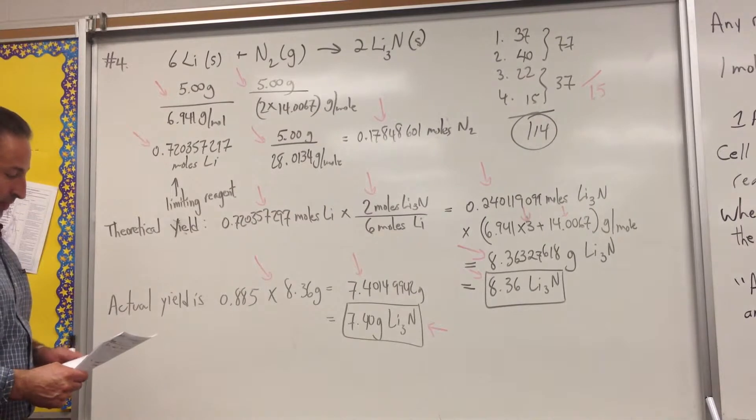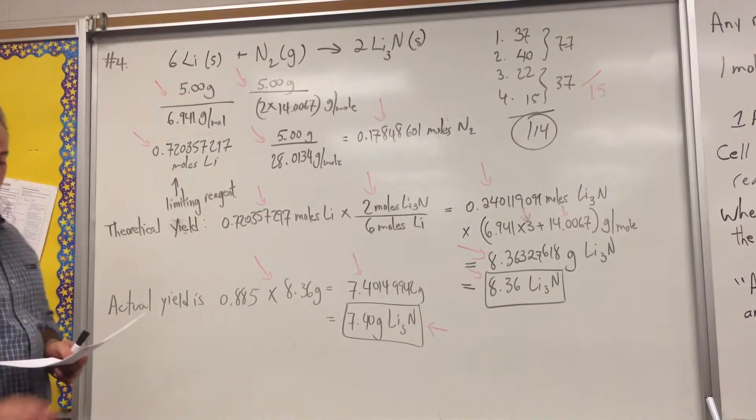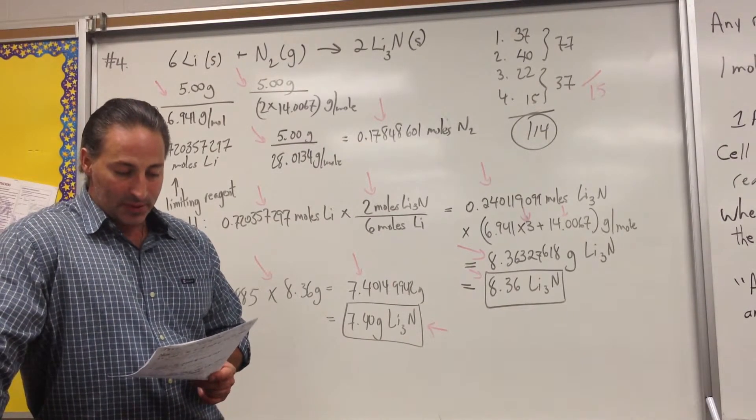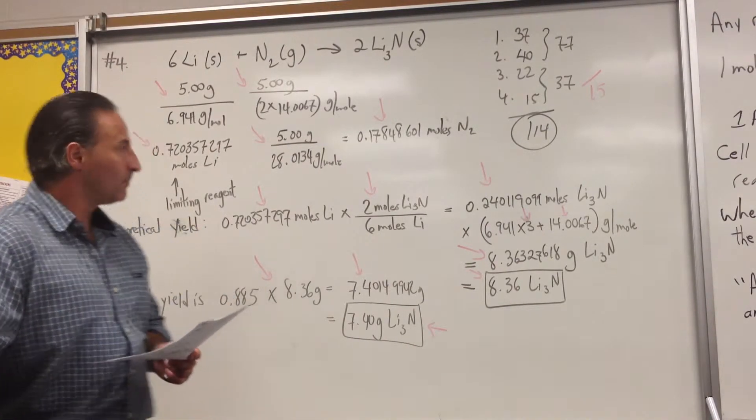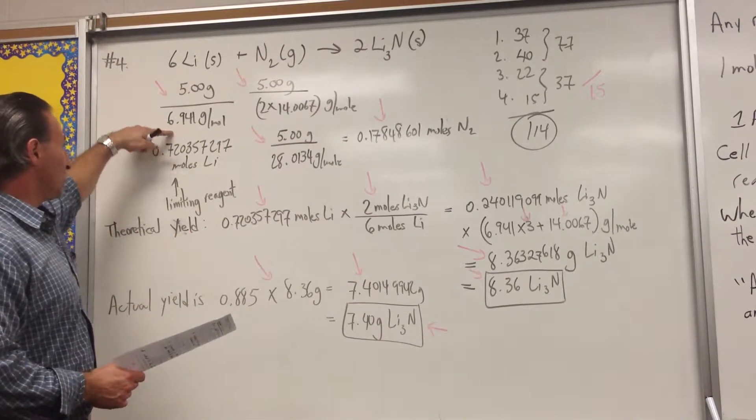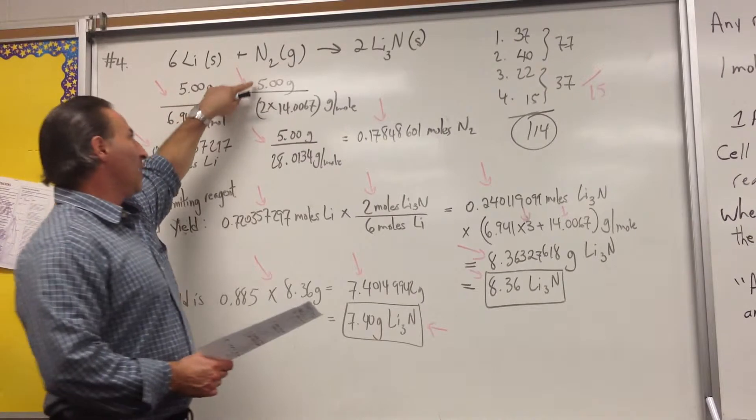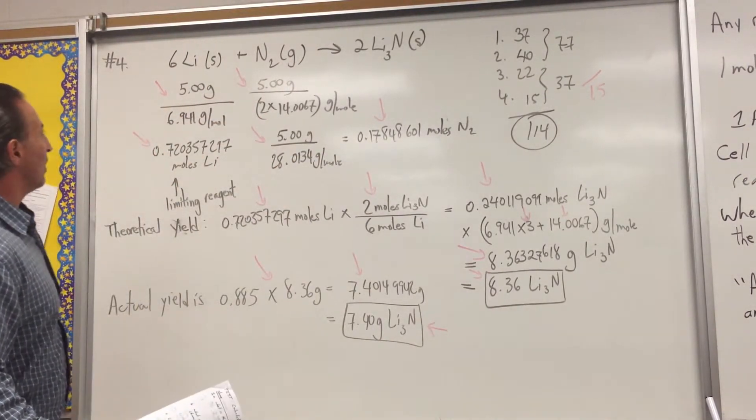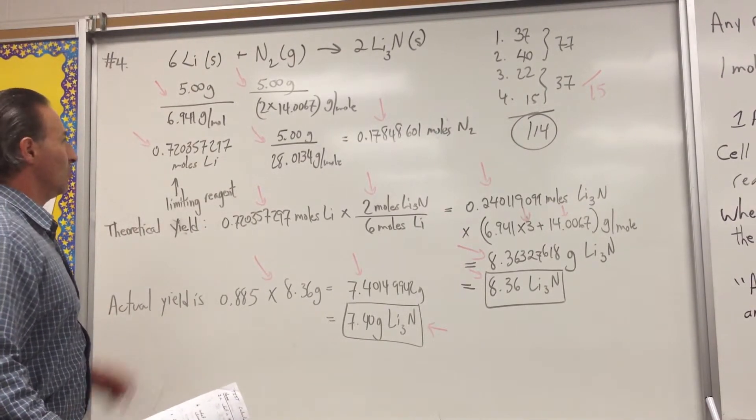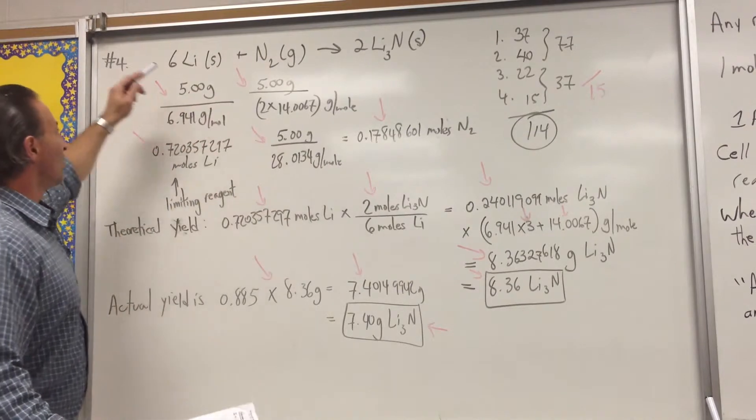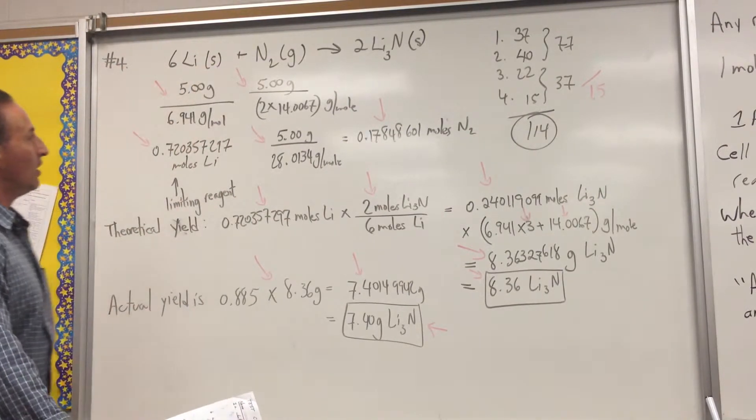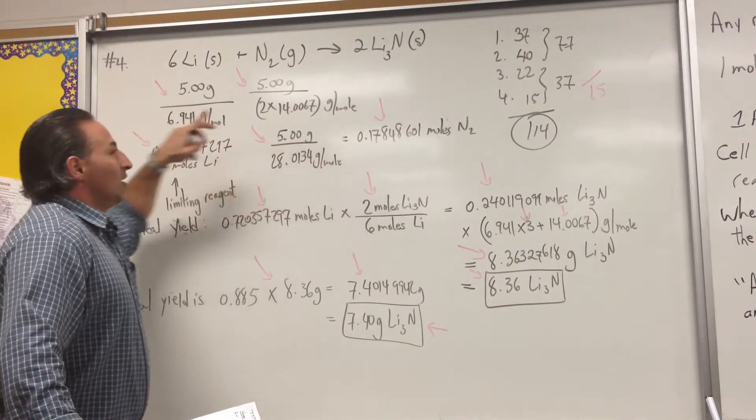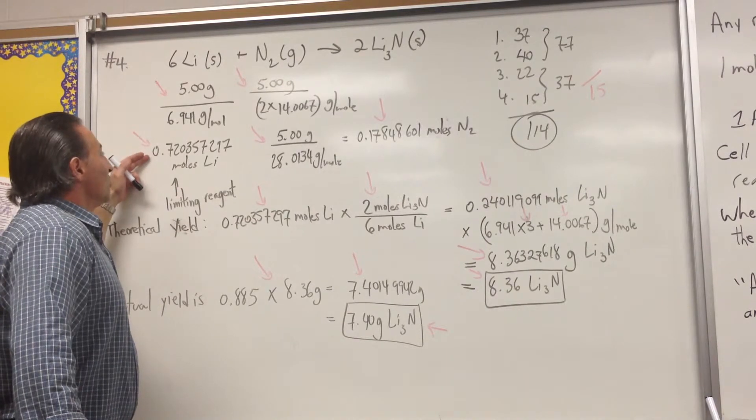So, we're told there's five grams of each reactant undergoes a reaction with an 88.5% yield, how many grams of lithium nitride are obtained from the reaction? Five grams of lithium divided by the molar mass of lithium gives you 0.72 moles of lithium. Five grams of nitrogen divided by the molar mass of nitrogen gives you 0.17 moles of nitrogen. Now, it looks like you have an excess of lithium, and you have more lithium than you do nitrogen, but the stoichiometry is 6 to 1. So, in fact, if you have 0.2 moles of nitrogen, you're going to need 1.2 moles of lithium.